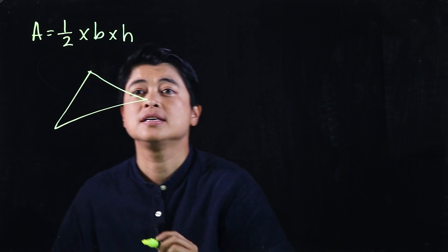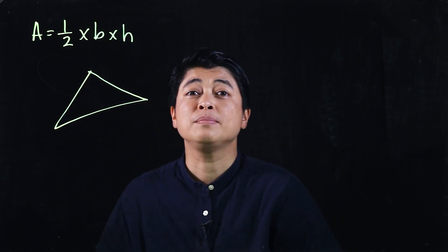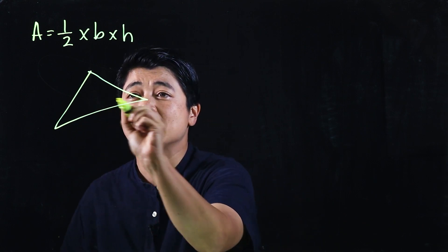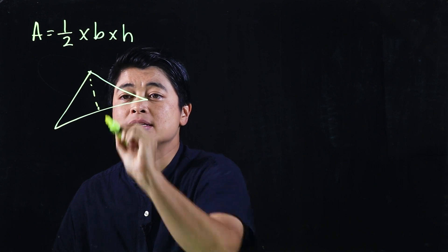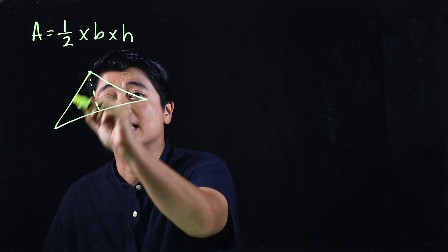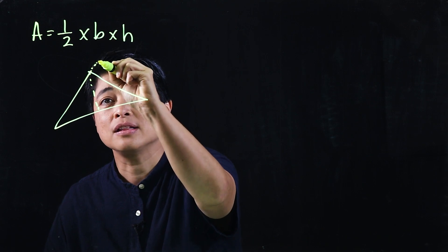We need to remember that if we drew a triangle such as this, not always will the height be inside the triangle. So for example, if this is a side, the height is there, but if this is the side, the height is actually outside of the triangle.